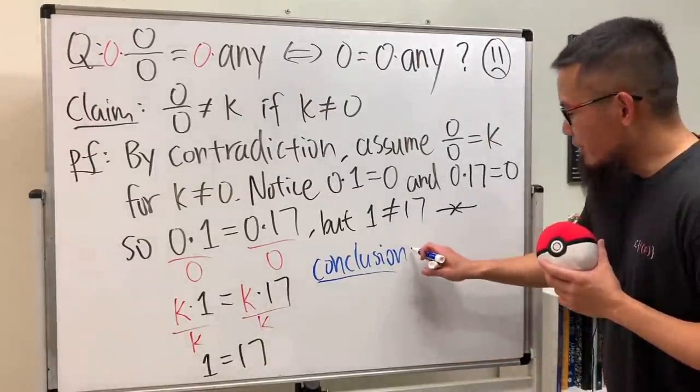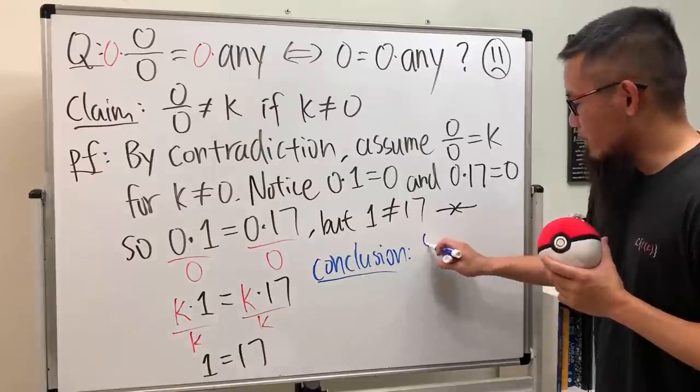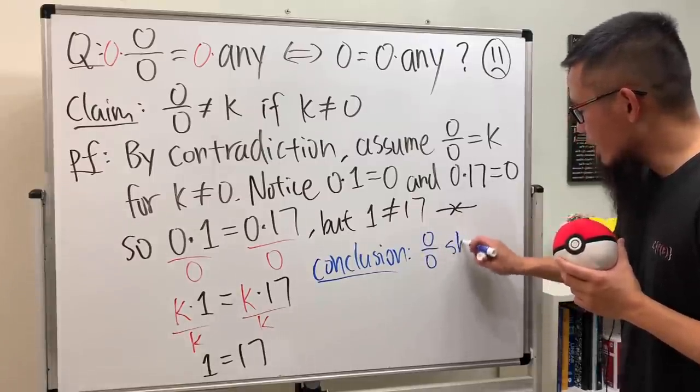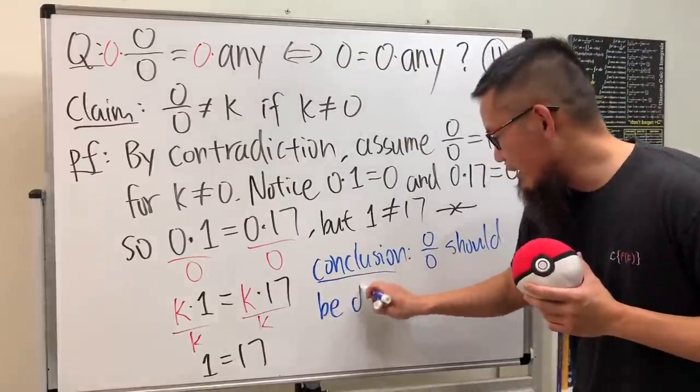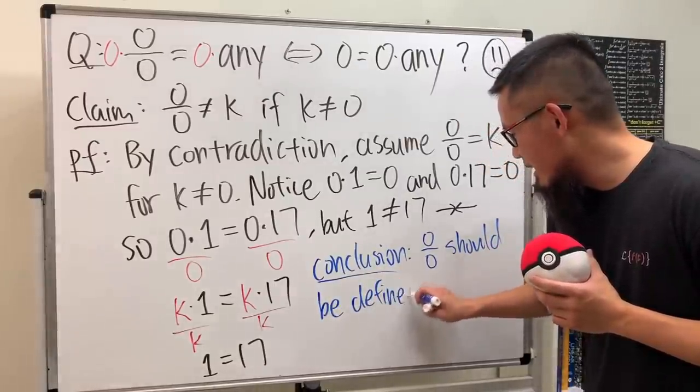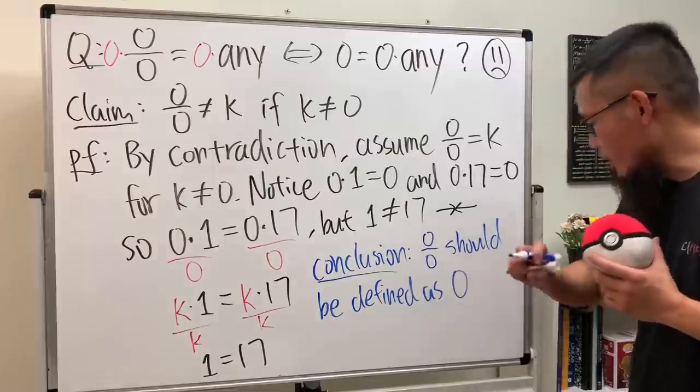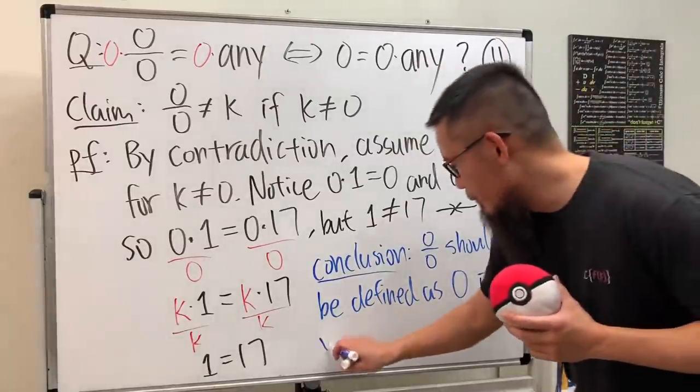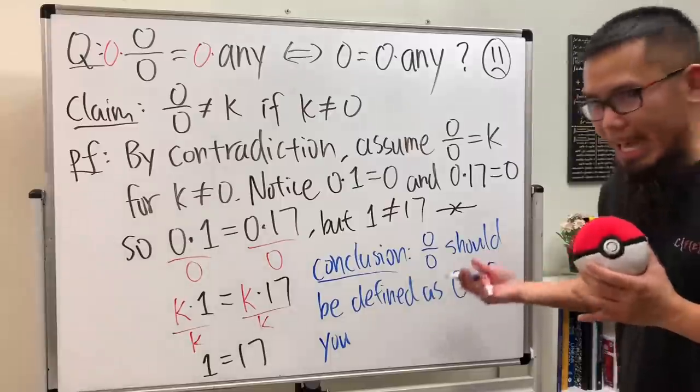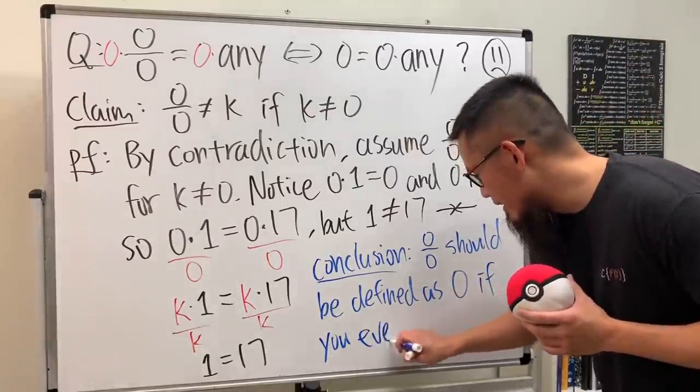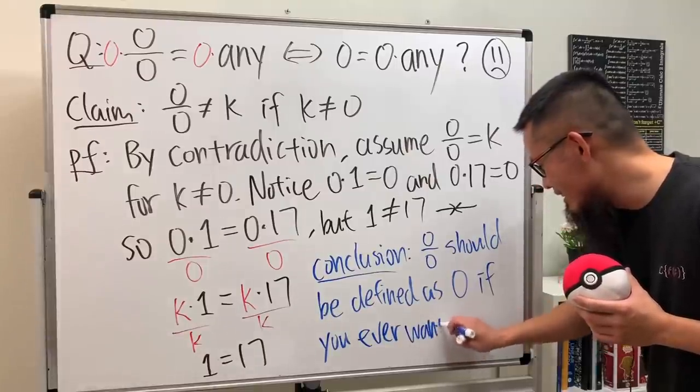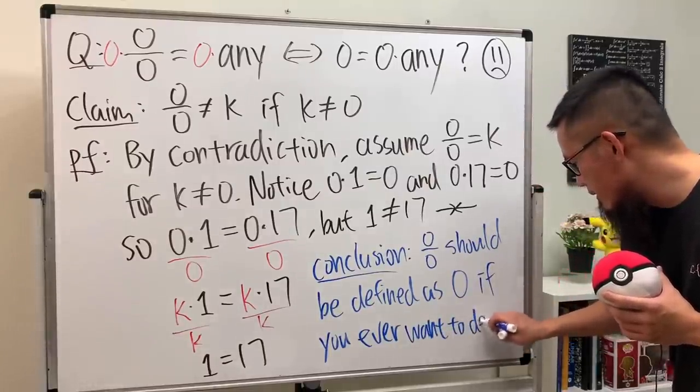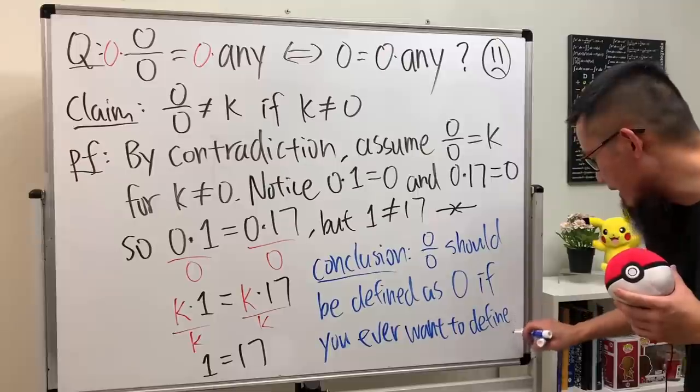But if you ever want to define zero over zero, I will just say zero over zero should be defined as zero. If you care, well I mean if you ever care, if you ever want to define it.